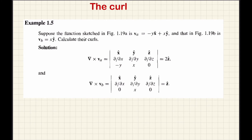The first vector function is Va equal to minus y x-cap plus x y-cap. The second function is Vb equal to x y-cap. You will get a positive value of curl, specifically a positive z-cap component of curl.